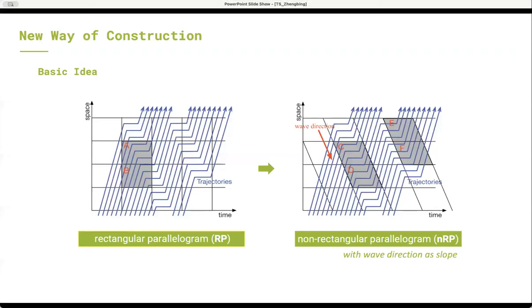According to Edie's generalized definition, only when homogeneous traffic states are contained by cells, the resulting average traffic variables are stationary and able to reflect the fundamental relations among speed, flow, and density. Therefore, when constructing the time-space diagram, it is important to make the traffic states contained by each cell as homogeneous as possible.